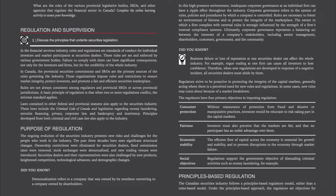Regulators strive to be proactive in protecting the integrity of the capital markets, generally acting where there is a perceived need for new rules and regulations. In some cases, new rules may come about because of a market breakdown. The regulators have four primary objectives in imposing regulation: consumer protection — without reassurance of protection from fraud and abusive or manipulative practices, investors would be reluctant to risk taking part in the capital markets; fairness — investors must perceive that the markets are fair and that no participant has an unfair advantage over them; economic stability — the efficient flow of capital across the economy is essential for growth and stability; and social objectives — regulations support the government objective of dissuading criminal activities such as money laundering.